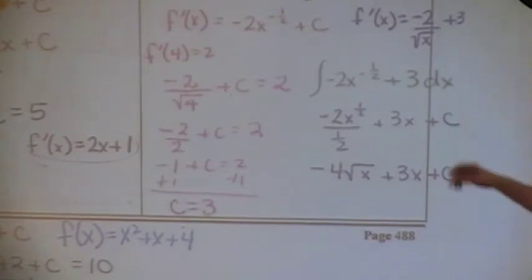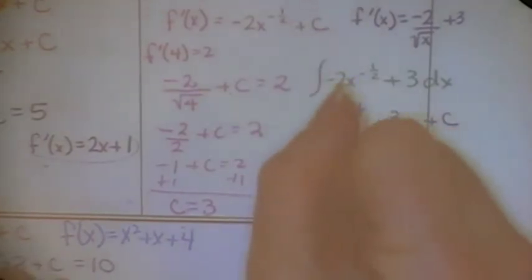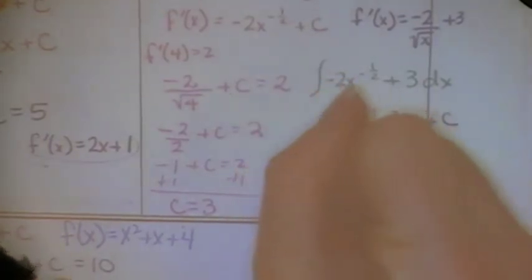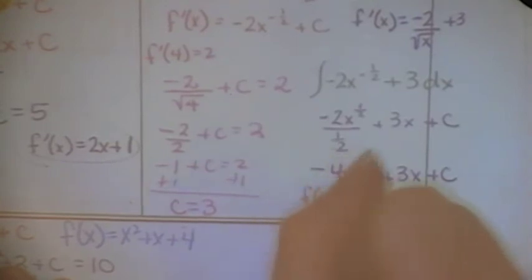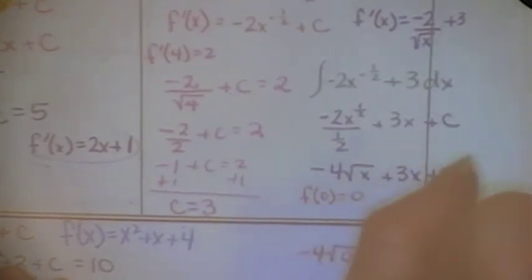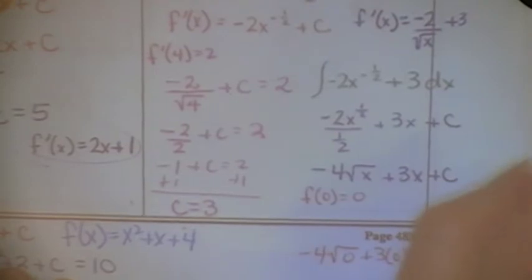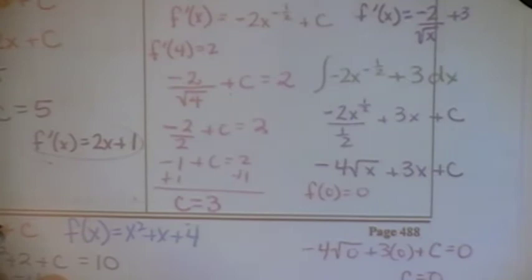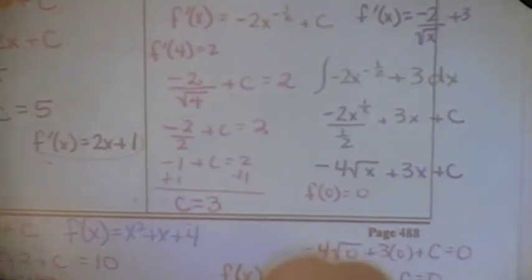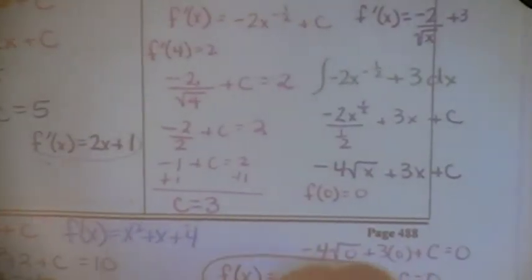If you write it as negative 2X to the negative one half plus 3, that's fine because we're about to take the anti-derivative of that anyway and we'd prefer it as a power. So I'm going to take the anti-derivative of negative 2X to the negative one half plus 3 dx. That gives: negative 2X to the positive one half divided by one half, plus 3X plus C. Which is negative 4 square root of X plus 3X plus C. Using the point (0,0), there's no C — so the original function is negative 4 square root of X plus 3X.